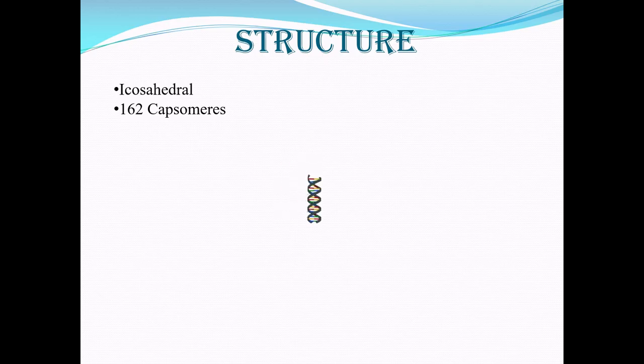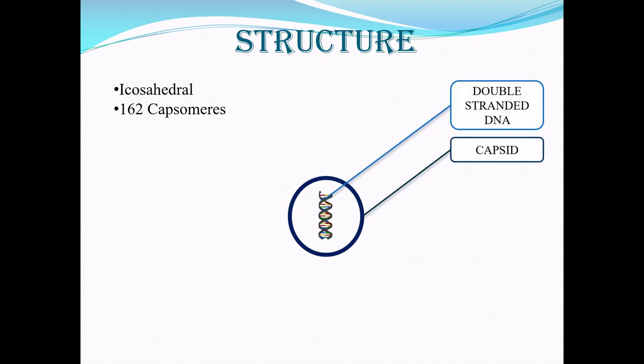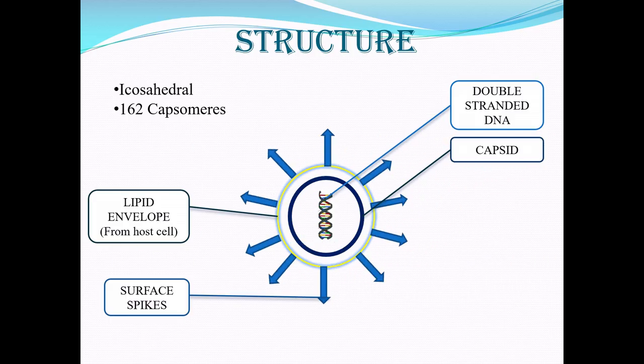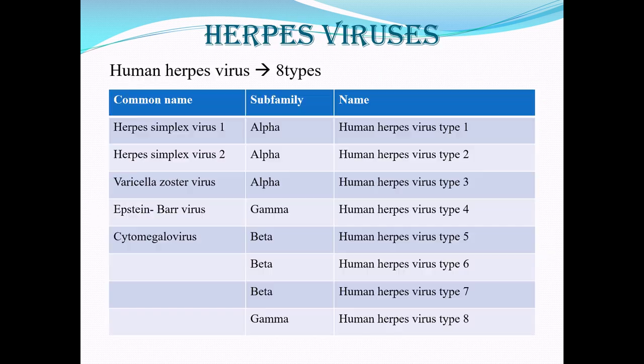So to summarize: you have the basic genetic material, a capsid which protects it, a lipid envelope, surface spikes, and in between the lipid envelope and the capsid, what is called tegument.